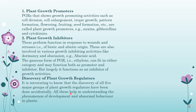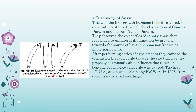Discovery of plant growth regulators — how were the hormones discovered? These plant growth regulators were discovered accidentally by different scientists in different ways. We will have a small glimpse of how and when these hormones were discovered. Discovery of auxin: auxin was the first growth hormone to be discovered. It came into existence from the observation of Charles Darwin and his son Francis Darwin, who were the first to identify the auxin hormone.